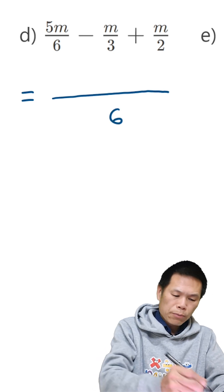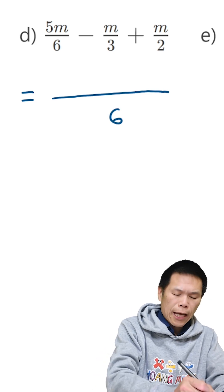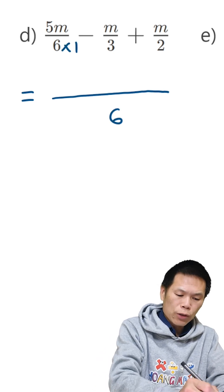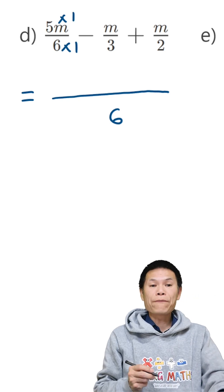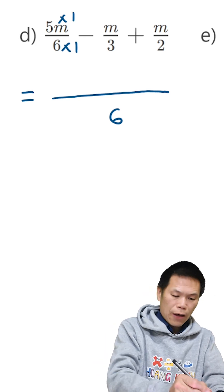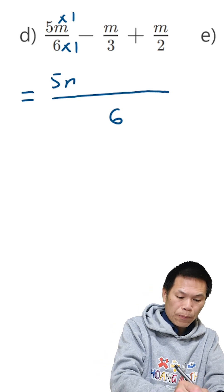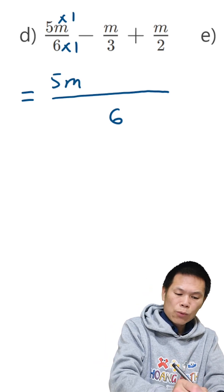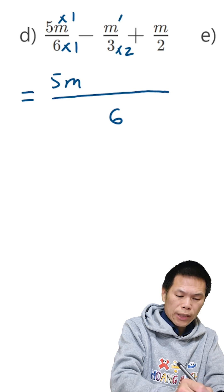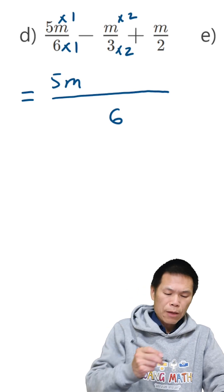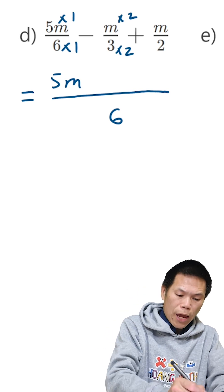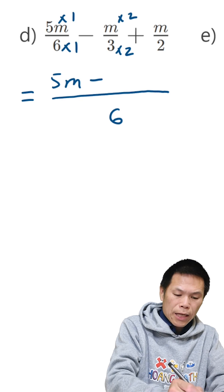So from 6 to 6, I times by 1. So this times by 1. So 1 times 5 is 5, so the answer is 5m. This one, I times by 2. So 2 times m gives me 2m. So I minus 2m.